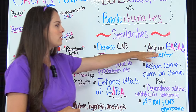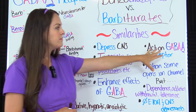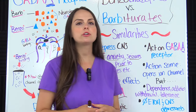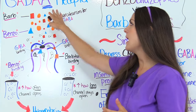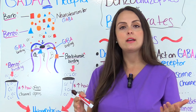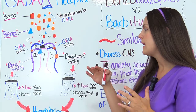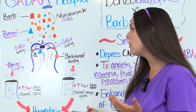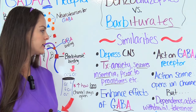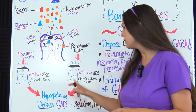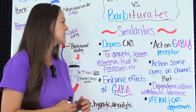Both of these drugs act on the GABA-A receptors in the body. When they bind, they cause this channel to open up. GABA-A receptors are known as ligand-gated receptors, so whenever binding occurs this channel opens up, chloride goes into the cell, hyperpolarizes it, and we get that depressed central nervous system — because GABA is an inhibitory neurotransmitter. How they influence this channel to work is a little bit different, and we'll talk about that in our differences in a moment.